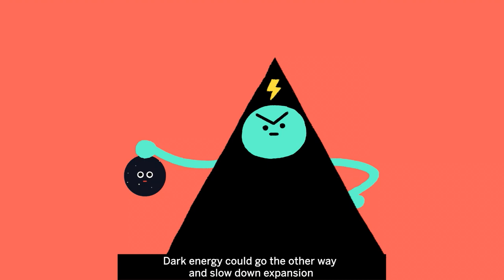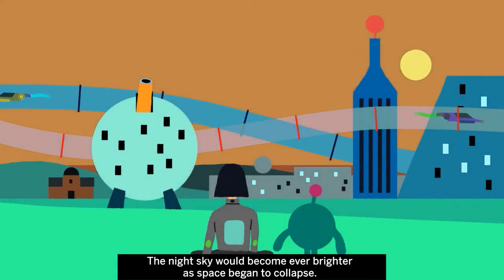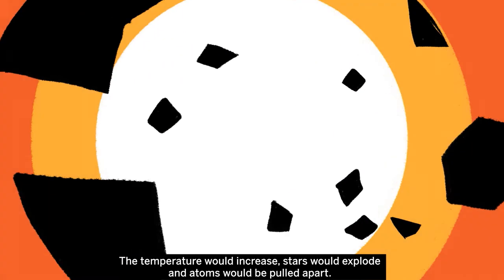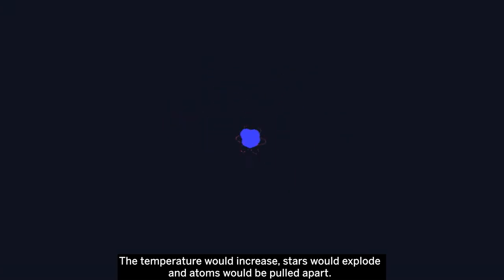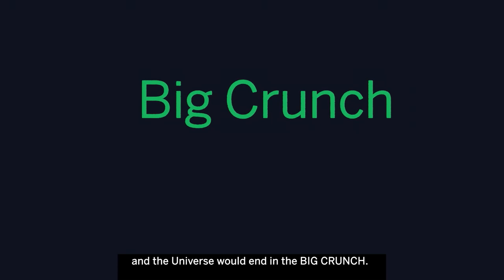Dark energy could go the other way and slow down expansion. The night sky would become ever brighter as space began to collapse. The temperature would increase, stars would explode, and atoms would be pulled apart. All matter would collapse into black holes, and the universe would end in a big crunch.